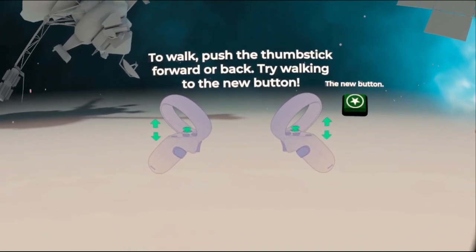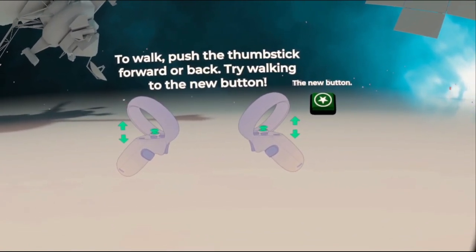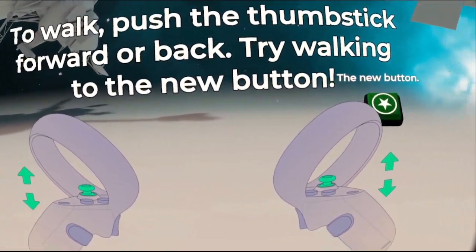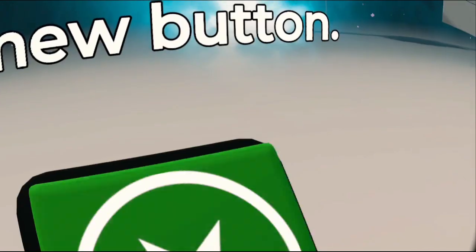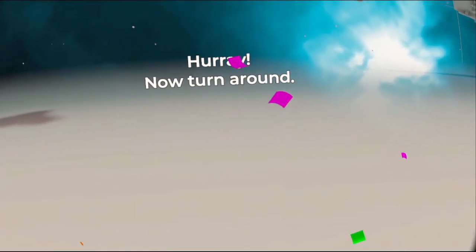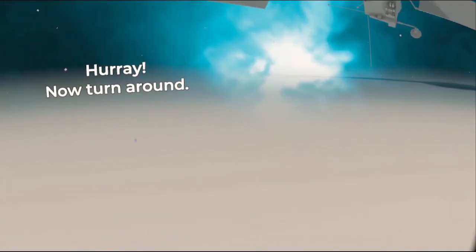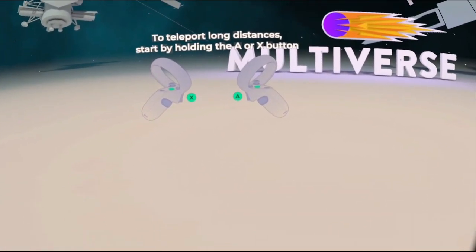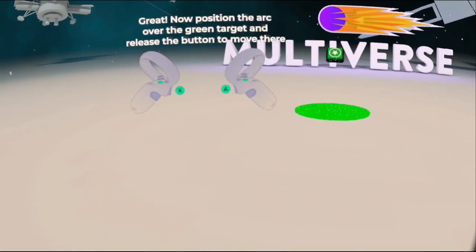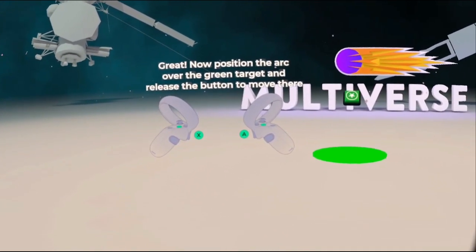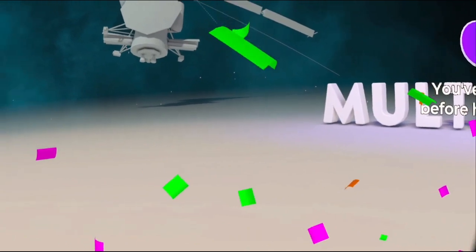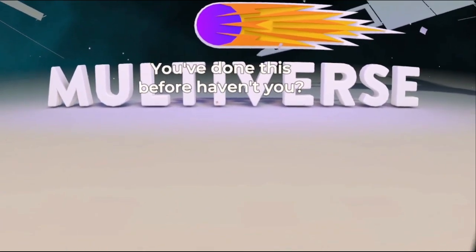To walk, push the thumbstick forward or back. Try walking to the new button. Oh, snap walking too? Where's my smooth? Hooray! Now turn around. To teleport long distances, start by holding the A or X button. Great. Now position the arc over the green target and release the button to move there. All pretty standard. You've done this before, haven't you? You betcha.